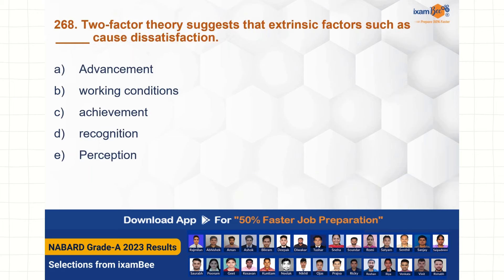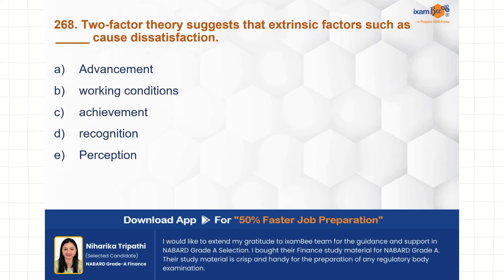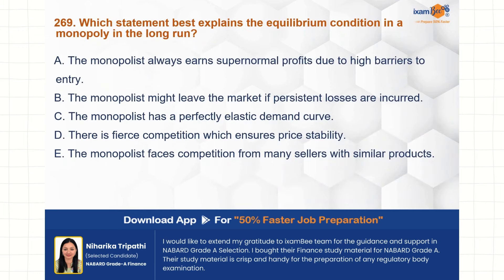The two-factor theory suggests that extrinsic factors cause dissatisfaction. Among the options — advancement, working conditions, achievement, recognition, and perception — working conditions is an extrinsic factor (hygiene factor) that causes dissatisfaction. Option B is the correct choice.